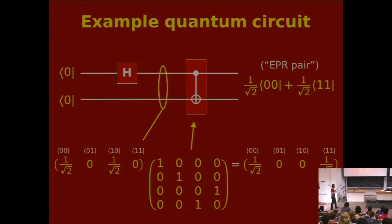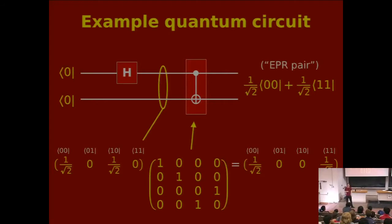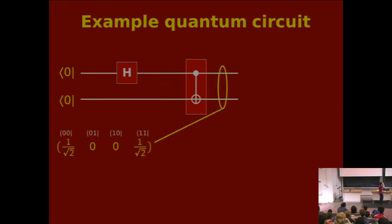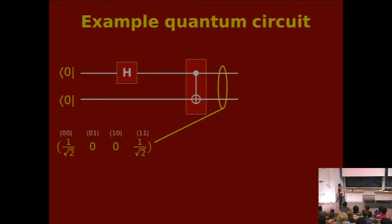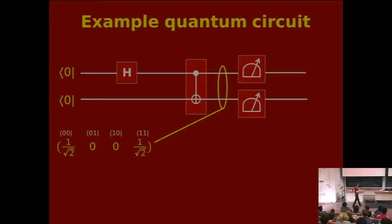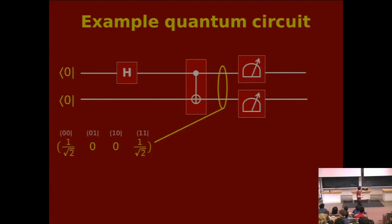Now for this entangled state, if you're computing, you want to know what the answer is — what did this compute. As before, you might say, now I will actually look at these photons and see how they look. You would measure them. And this is where there's a bit of a twist.